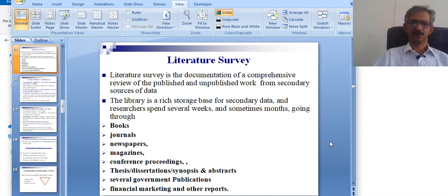Conference proceedings, theses, dissertations, synopses and abstracts, several government publications, financial marketing and other reports. These are the already published research sources, and we call them the secondary sources.